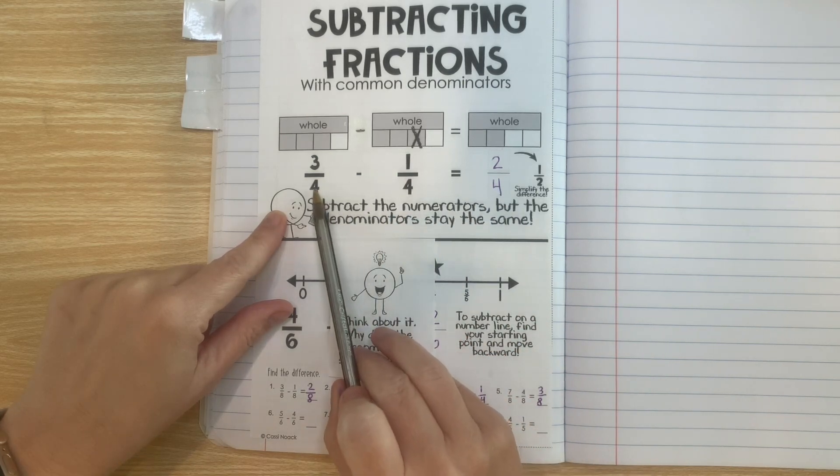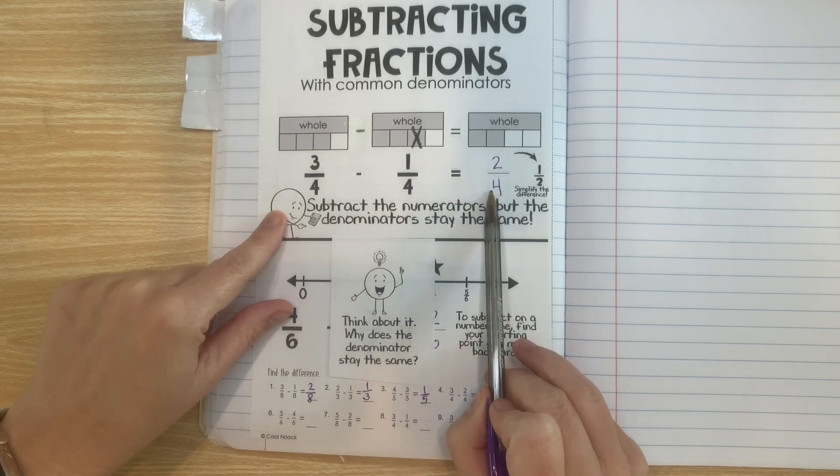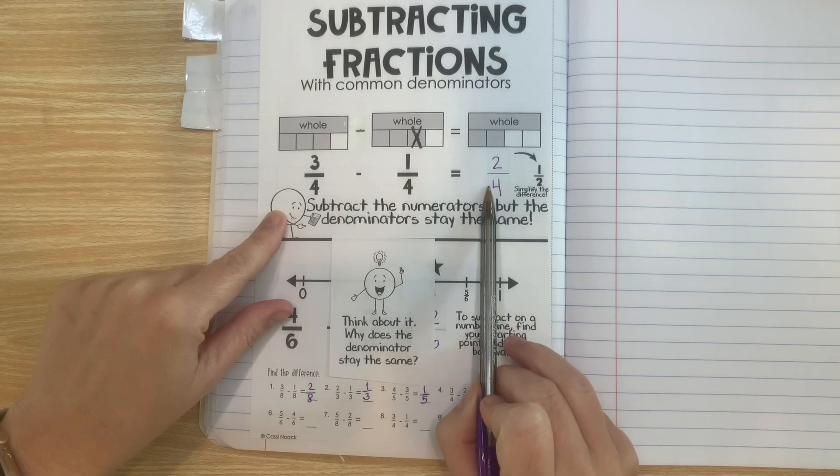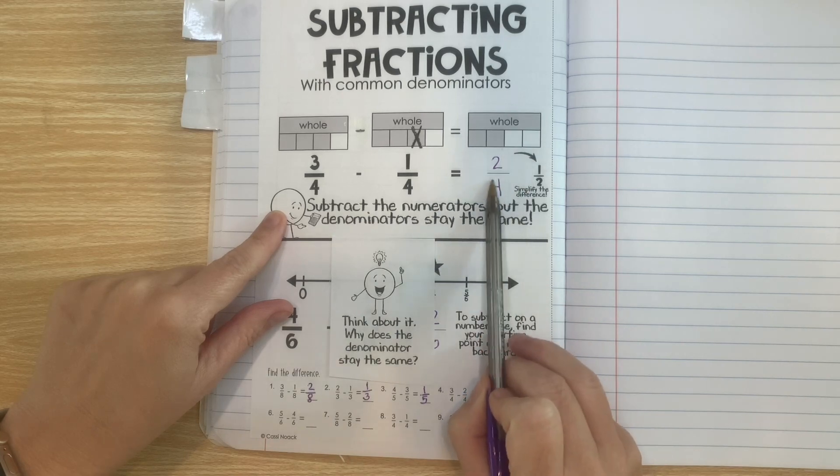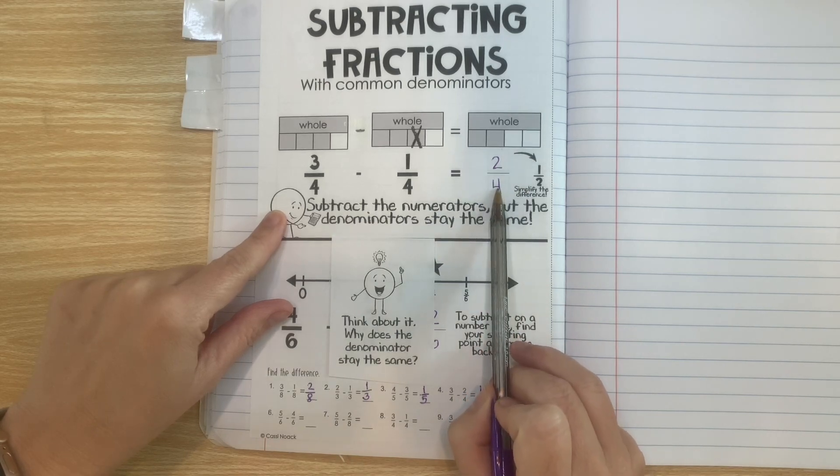So in this case if we were to subtract the numerators 2 we would get a 0. And remember the denominator represents the number of parts in one whole. If there's a 0 here how can we have 0 parts in one whole? We can't.